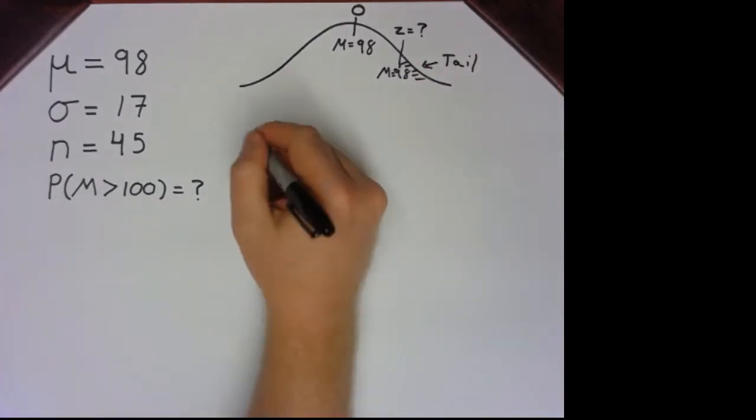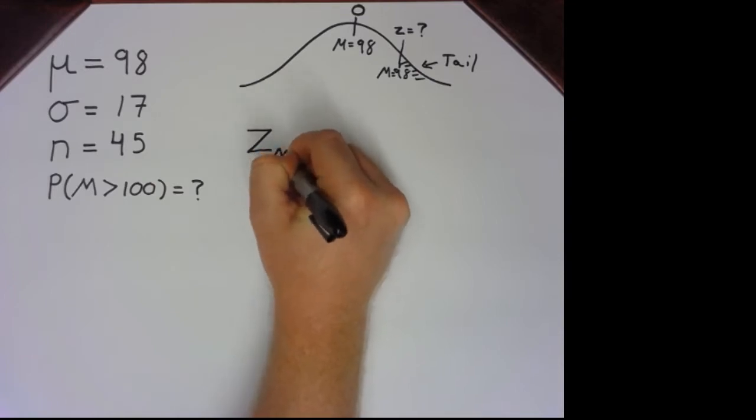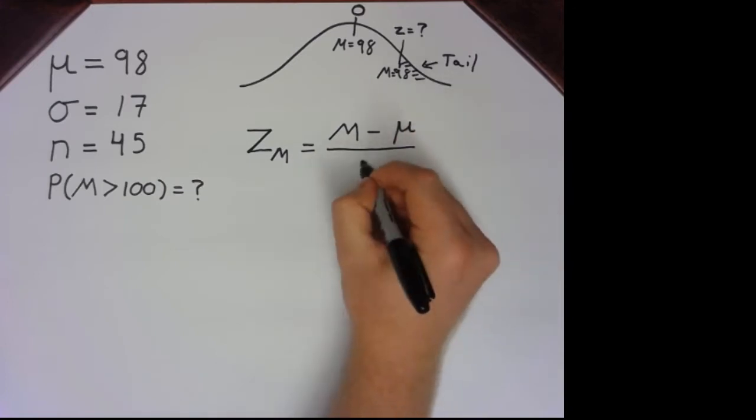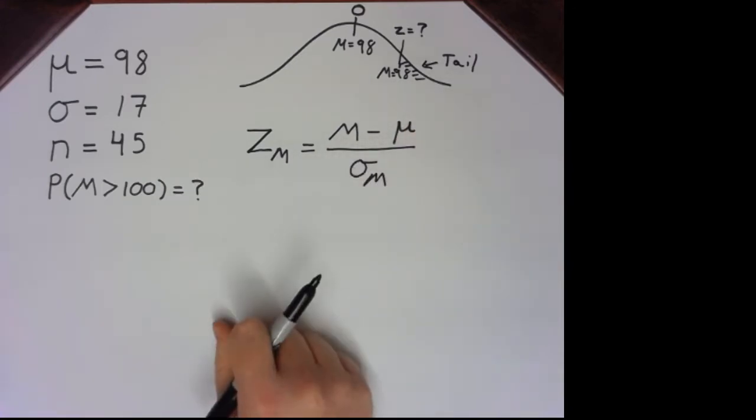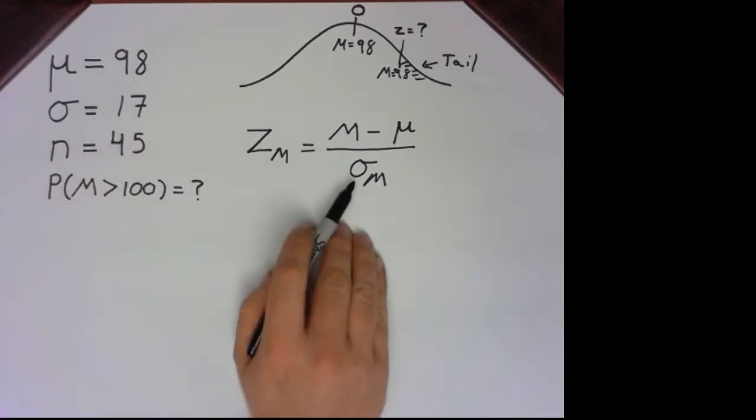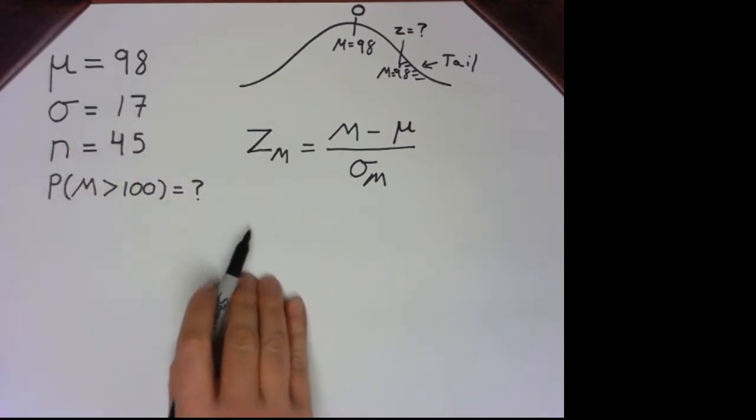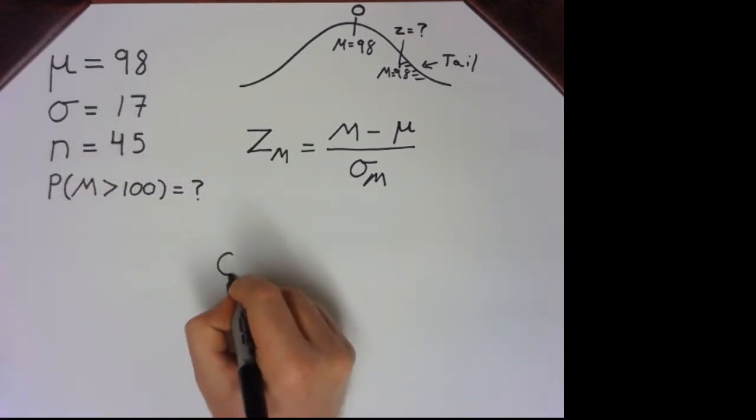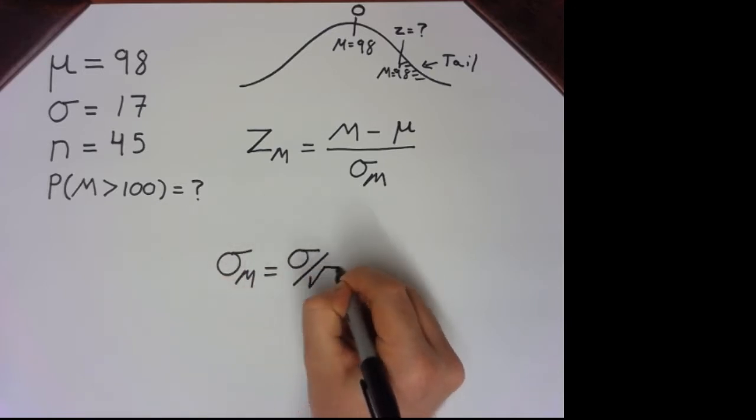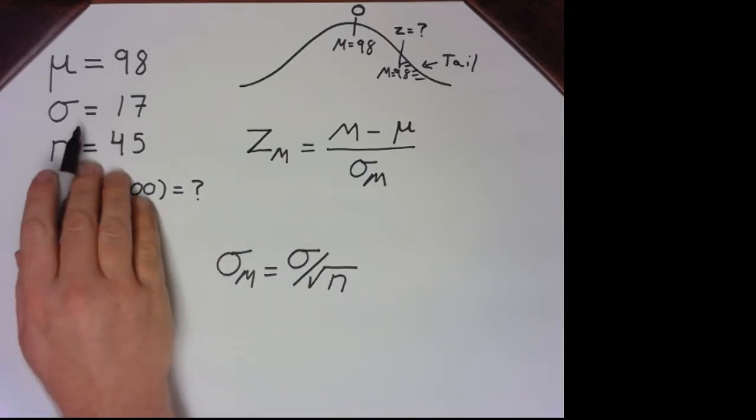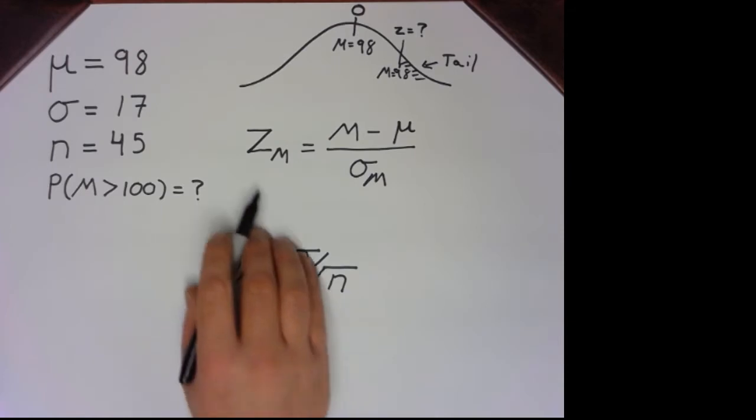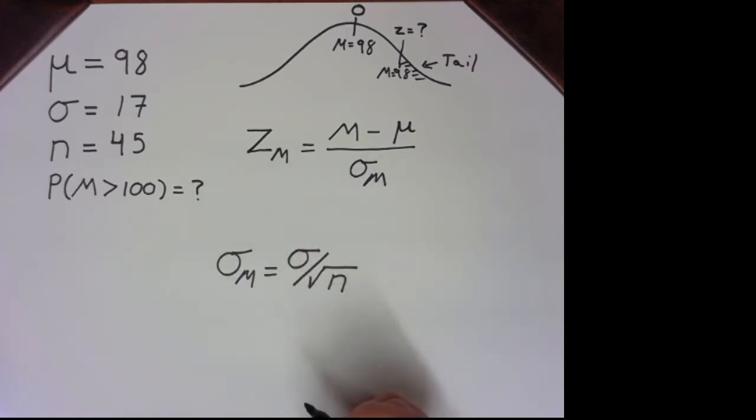So now we need that z-score. We write out the z-score formula. We know we need the mean of the sample, the mean of the population, and then the standard error of the mean. Now what do and don't we have? We have the sample mean, we have the population mean, we do not yet have the standard error. So let's write out the formula for standard error: population standard deviation σ divided by the square root of our sample size. We can substitute in those values and solve.